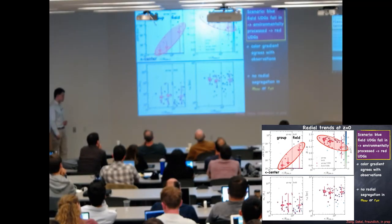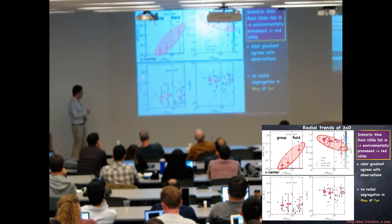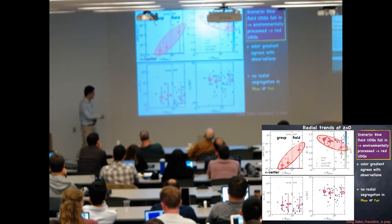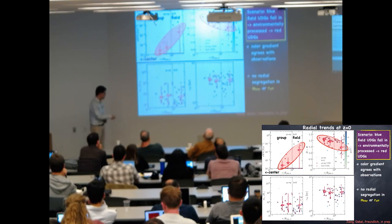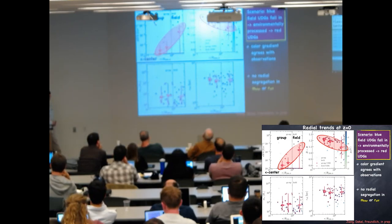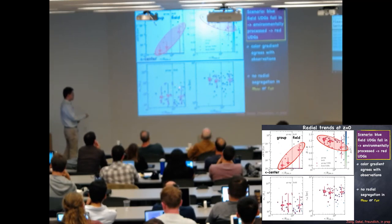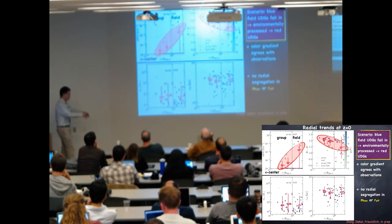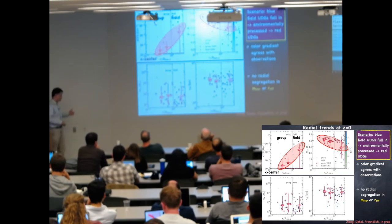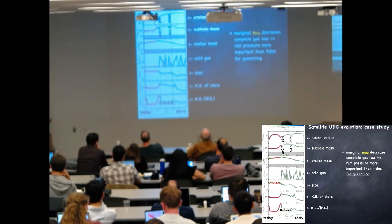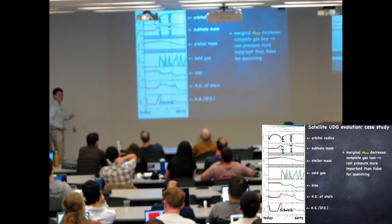We also plot the stellar mass of UDGs at redshift zero and the effective radii as a function of distance to the center. We find the radial profiles are almost flat. This is interesting because it relates to whether tidal stripping is important in making red UDGs in the center. Naively you would expect tidal stripping to make things smaller - lower in mass and smaller in size, since stars on the outskirts are removed - but we see a flat distribution.